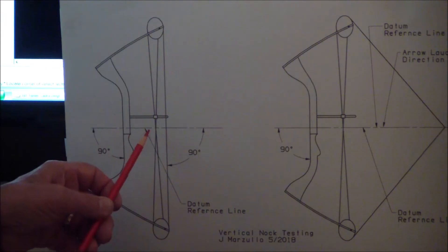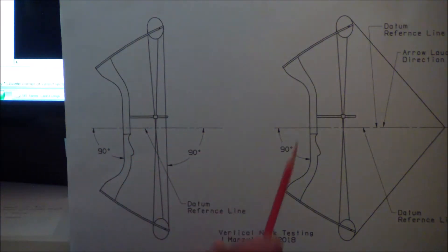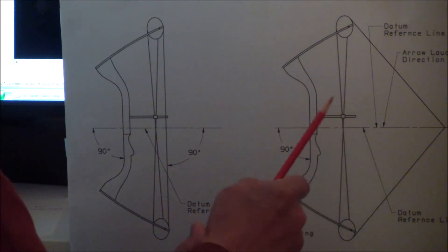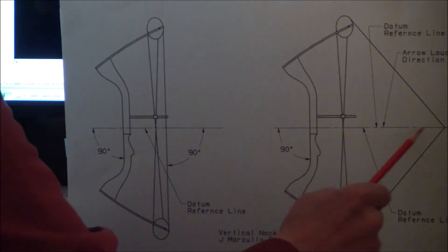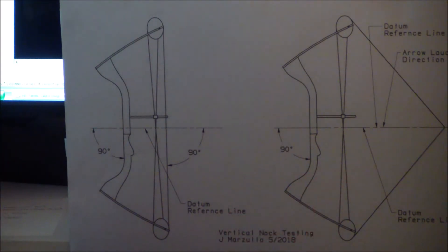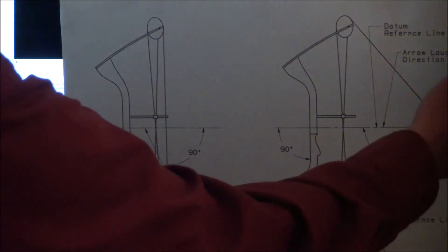It's a point that we're going to measure knock travel from. Now here is the same bow shown with everything 90 degrees. You drew the bow back and there's no deviation whatsoever. The knock came straight back. It's 90 degrees to the reference point and everything's perfect. Unfortunately, that's not the way the world works, and very few things in life are perfect, and certainly not vertical knock travel.